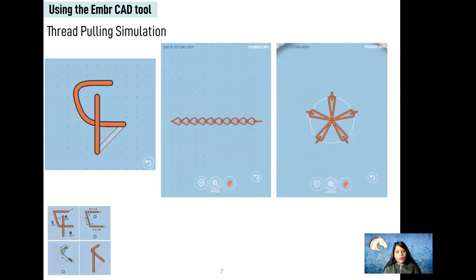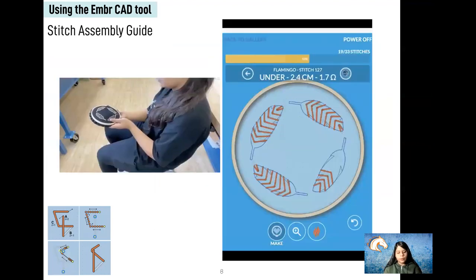The thread model is used to simulate the conductive thread as a user executes a stitch, such as showing what the final stitch looks like when the user pulls the thread taut. The user can also enter a stitch assembly view, which provides stitching instructions and keeps an update of the user's progress.